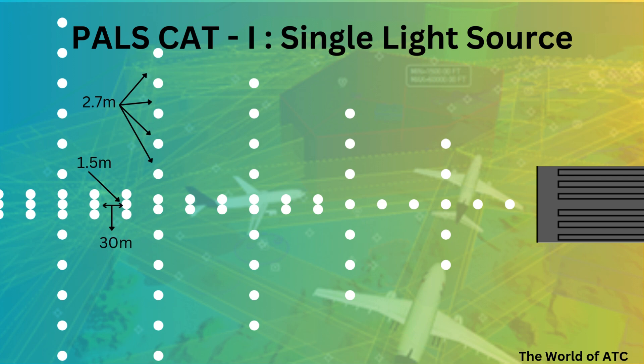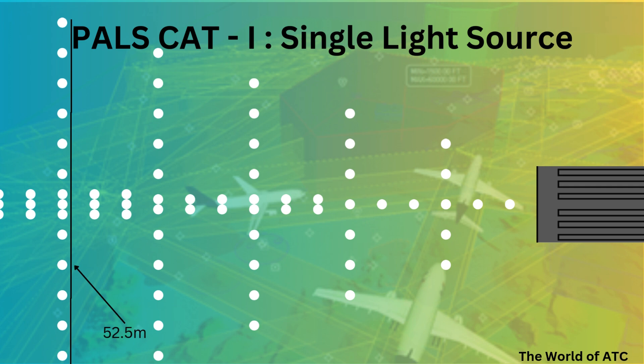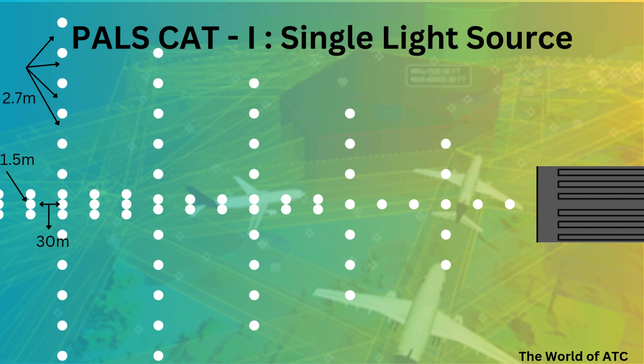Then the triple light source starts from 600 meters. The distance between the lights of the centerline would be 1.5 meters, and the last crossbar will have a length of 52.5 meters. The crossbar lights are spaced 2.7 meters apart, the distance between the crossbar lights and the centerline lights is not more than 6 meters, and longitudinally the centerline lights are spaced 30 meters from each other.